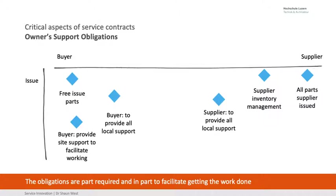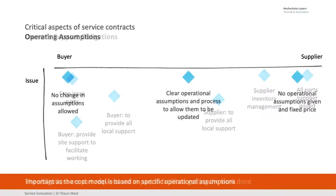Owner support obligations — what does the owner have to do for you? They may issue everything free to me, then I just have to install it, or I have to source all the parts. It doesn't matter as long as we know where we are. It's part of scope but it's also support obligations. What happens if they do something they're meant to do and they do it late? Obligations are part required and part to facilitate getting the work done. Without the customer doing something, I cannot do the work, and whilst I'm waiting I want to be paid.